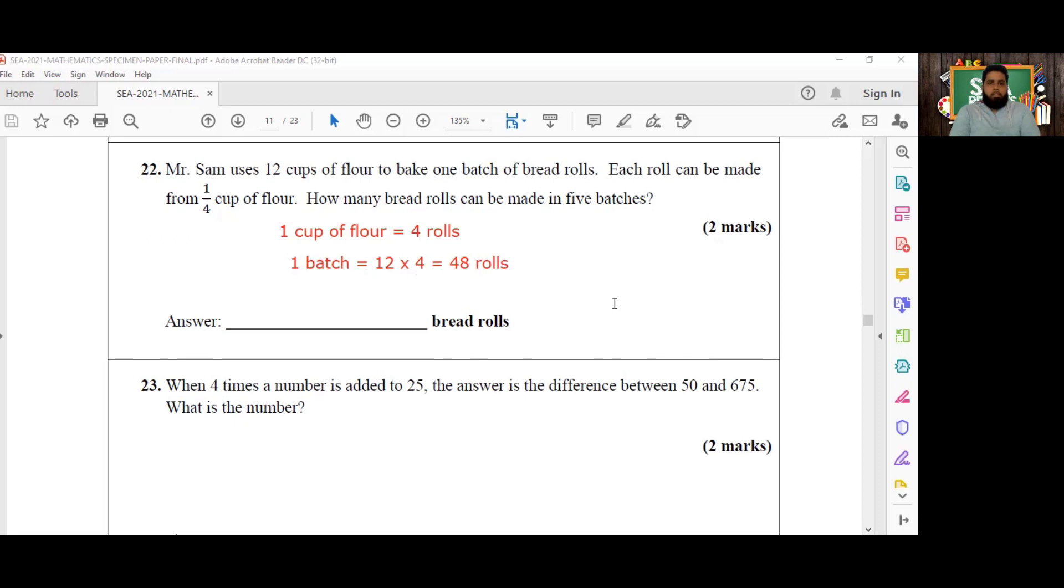And now we'd like to know how many bread rolls can be made in five batches. So for that final calculation, we're going to do five batches will be equal to 48 times 5, which is equal to 240 rolls. So that is the answer for number 22. And before we move on to our final question for today, which will be number 23, I just invite you to listen to one short message from myself. We'll be right back with number 23 after this.